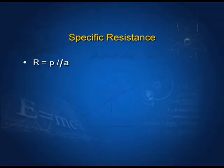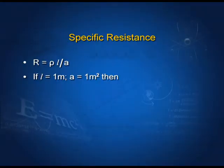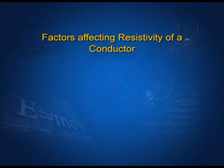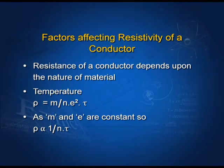Specific resistance: from R equals rho·L/A, if we take length L equals 1 meter and area of cross-section A equals 1 meter square, then rho equals R ohm-meter. So resistivity is defined as the resistance offered by a conductor of unit length and unit area of cross-section. Factors affecting resistivity: since rho equals m/(ne²τ), and m and e are constants, resistivity is inversely proportional to n (free electron density) and tau (relaxation time).